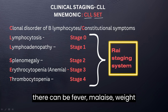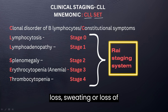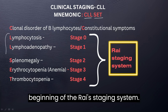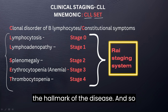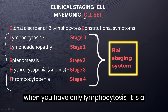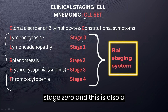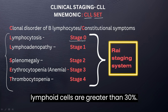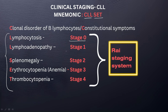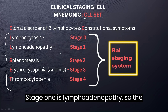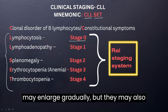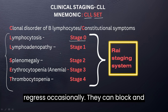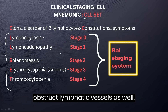Constitutional symptoms — meaning fever, malaise, weight loss, sweating, or loss of appetite — mark the beginning of the Rai staging system. L stands for lymphocytosis, which is usually the hallmark of the disease. When you have only lymphocytosis, it is stage zero, a low-risk disease; lymphoid cells are usually greater than 30%. Stage one is lymphadenopathy — lymph nodes are enlarged, rubbery, non-tender; they may enlarge gradually but also regress occasionally, and they can obstruct lymphatic vessels.